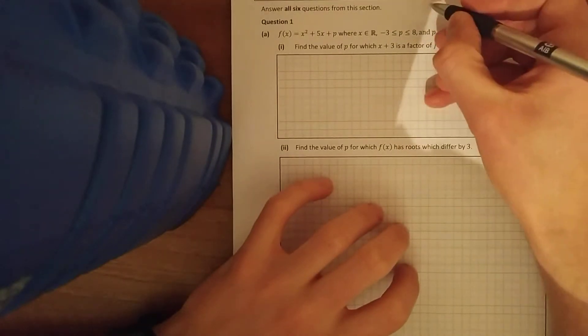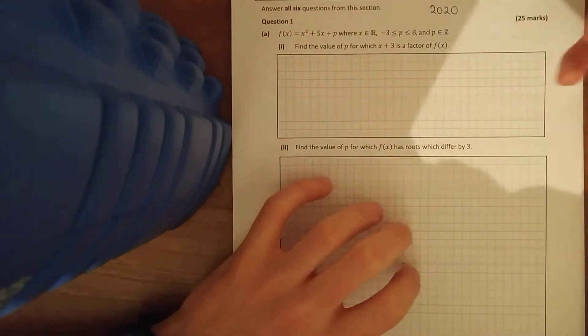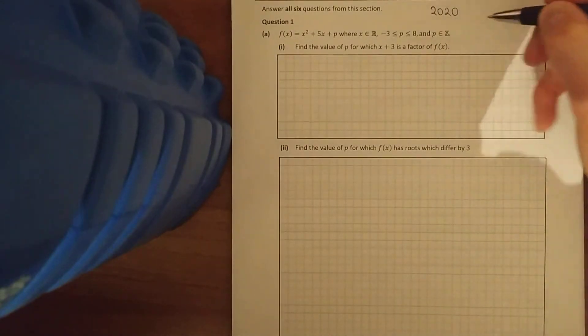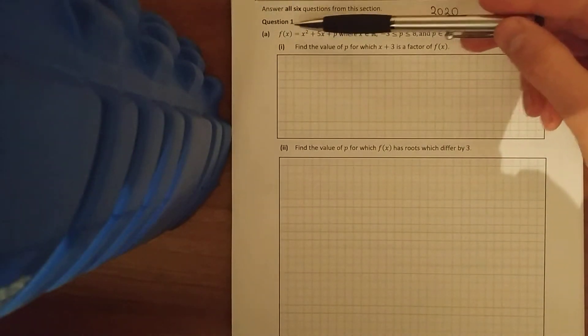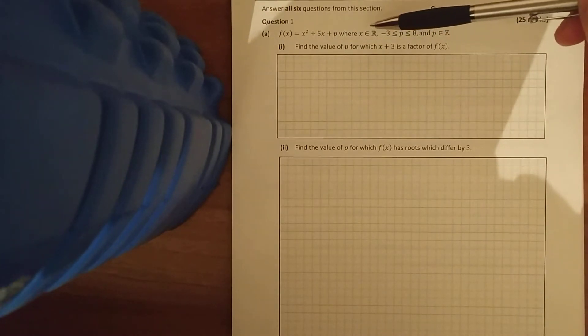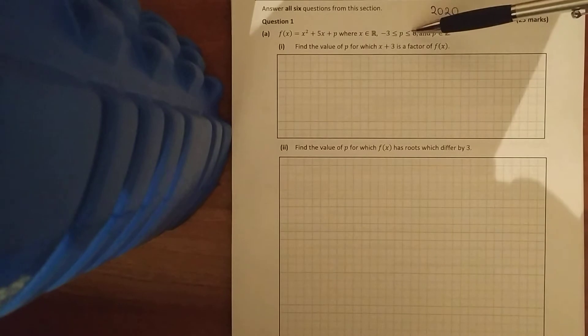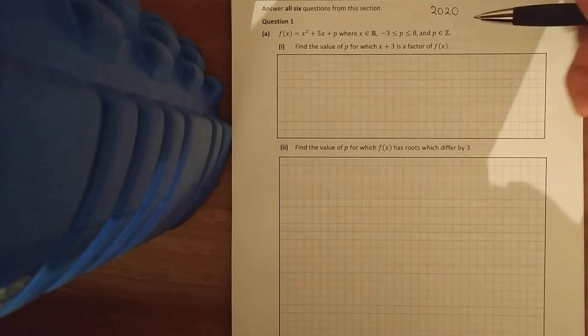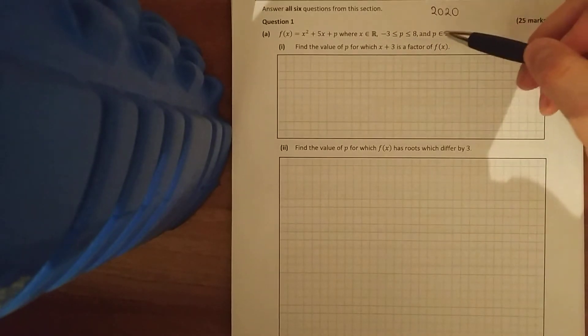Morning folks, here we're looking at 2020 paper one question one. The first one here, f of x equals x squared plus 5x plus p, a quadratic where x is an element between minus 3 and 8. So the roots are going between minus 3 and 8, or the values of p sorry, between minus 3 and 8.